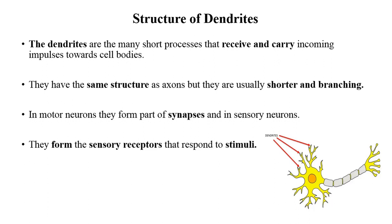Dendrites are the many short processes that receive and carry incoming impulses towards the cell body. Extensions that carry impulses toward the cell body are called dendrites; they connect the cell body with other neurons. The structure of dendrites is similar to axons, but they are usually shorter and branching. In motor neurons, they form part of the synapse. At the end of the axon, there are small knob-like structures that connect with the dendrites of the next neuron through synapses, transferring information from one neuron to another.